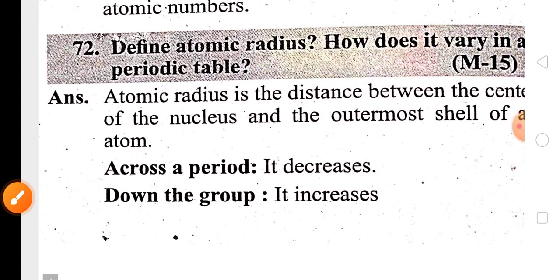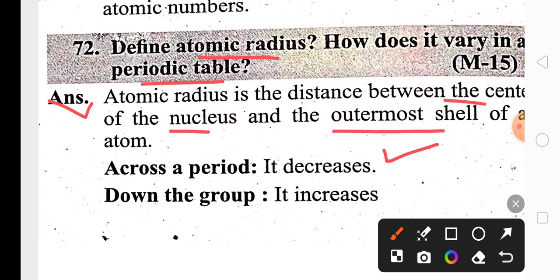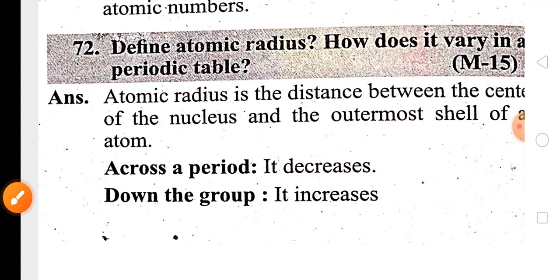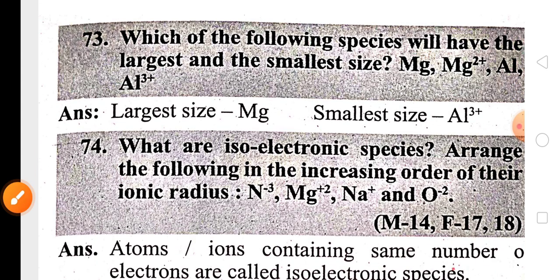An important three-mark question is the definition of atomic radius and its trend. Atomic radius is defined as the distance between the center of the nucleus to its outermost shell. Atomic radius decreases across the period and increases down the group. This is important for three marks.